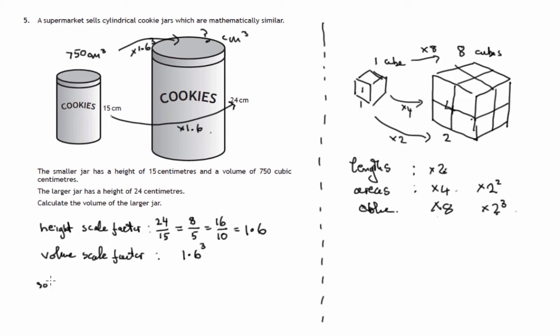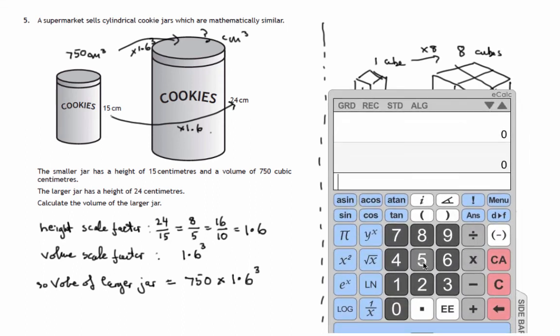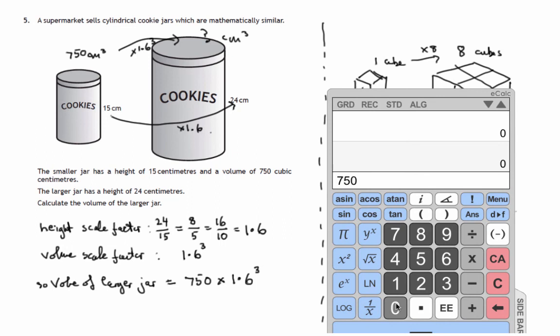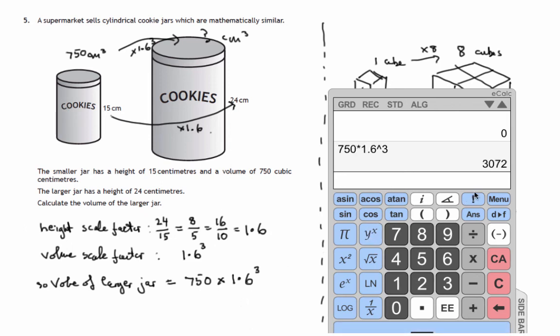So volume of larger jar would be the smaller jar's volume, 750 times 1.6 cubed. So we'll need to work that out. So 750 times 1.6 raised to the power 3, and that comes to 3072. Measurements are cubic centimetres.